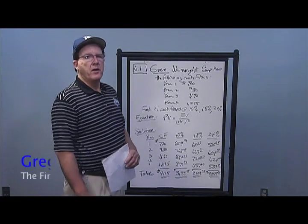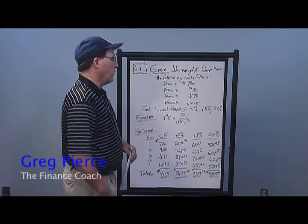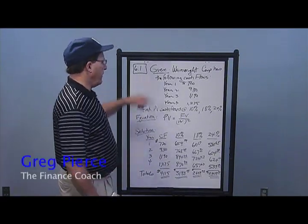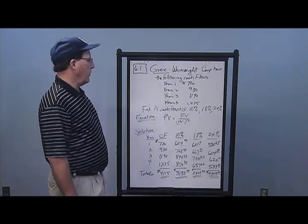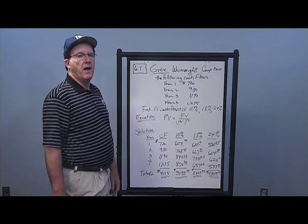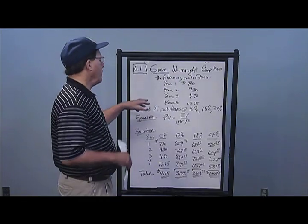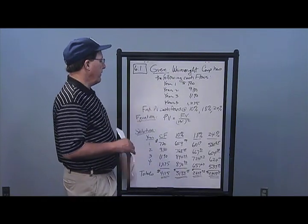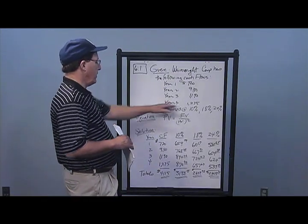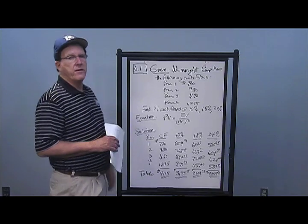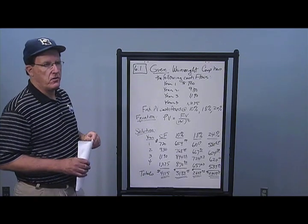In Chapter 6, Problem 1, we see that Wainwright Corporation has the following cash flows: Year 1, $720; Year 2, $930; Year 3, $1,190; Year 4, $1,275.